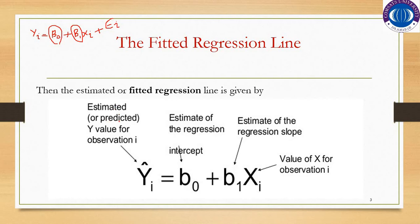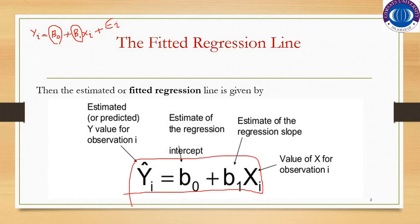The estimated or predicted value for y observation i, when we estimate beta naught and beta 1 and substitute these values, would be y hat. This is the estimate of the regression intercept. Beta 1 is the estimate of the regression slope, and x is the value for observation i. So this is the estimated line, also called the fitted regression line. This line is called y on x — we are regressing y on x.